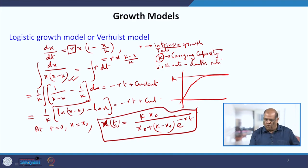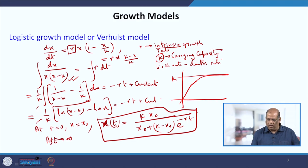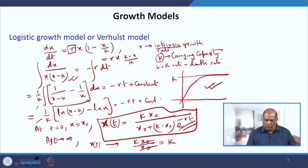I will leave it to you how to find this solution — it is just integration. From this solution, you can see that as t becomes large, the exponential term goes to 0, and x(t) approaches k·x₀ / x₀ = k. So for large t, the value reaches the carrying capacity k.